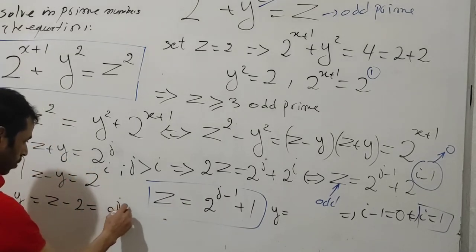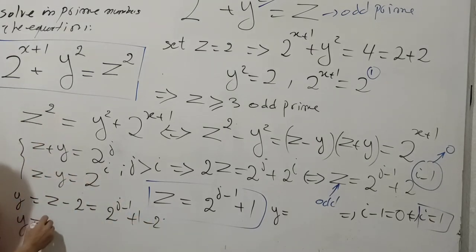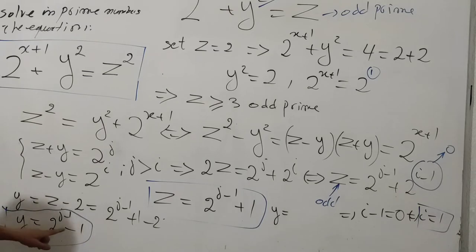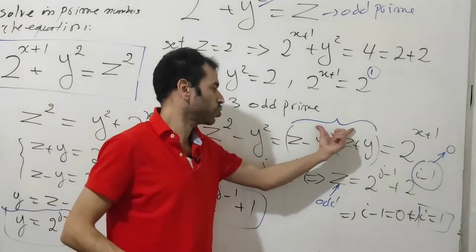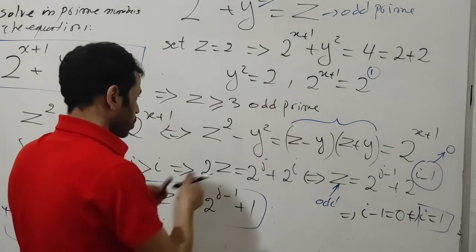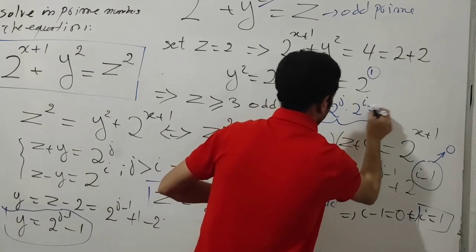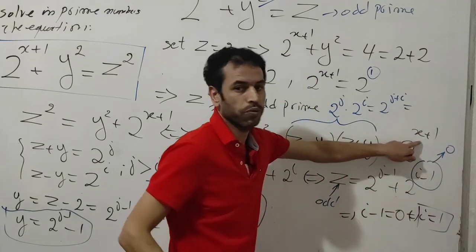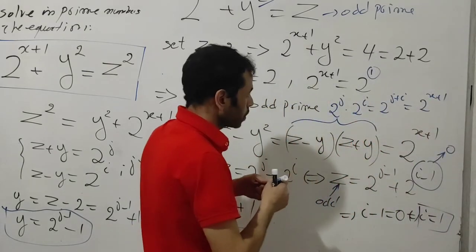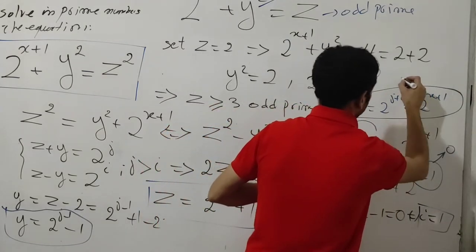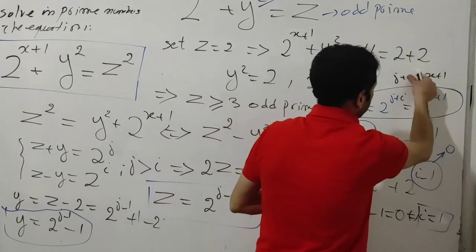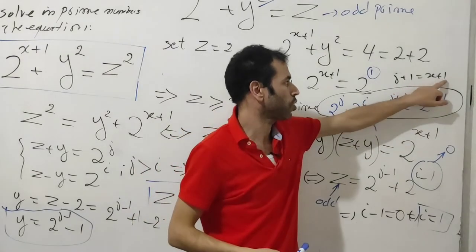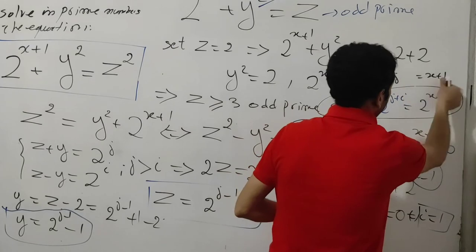So we have y = 2^(j-1) - 1 and z = 2^(j-1) + 1. Now, the product (z - y)(z + y) = 2^i · 2^j = 2^(i+j) = 2^(x+1), so j + i = x + 1. Since i = 1, we get j + 1 = x + 1, which means j = x.